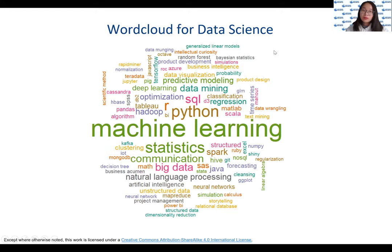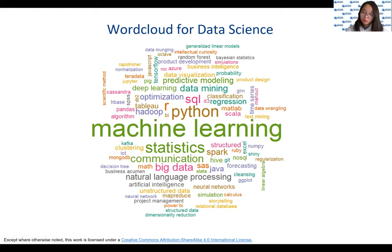If you do a word cloud for data science, you can get something like this. Of course, machine learning is very important, but we have other important things such as statistical techniques and tools like R and Python, databases such as SQL, and visualization tools. The idea is that machine learning is part of a much bigger ecosystem and must be used at scale.